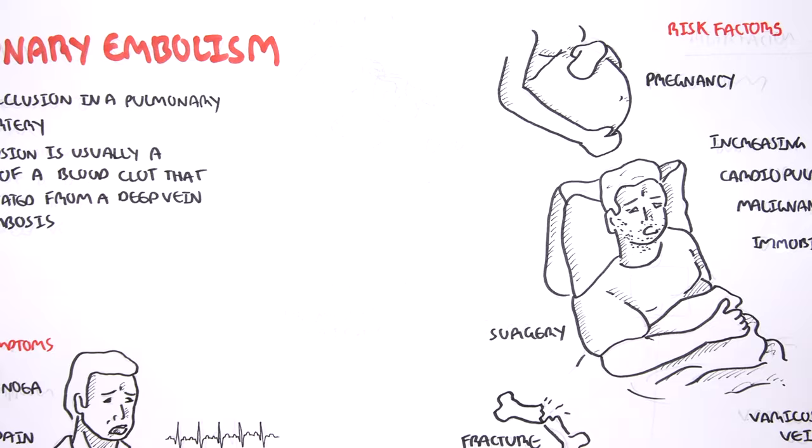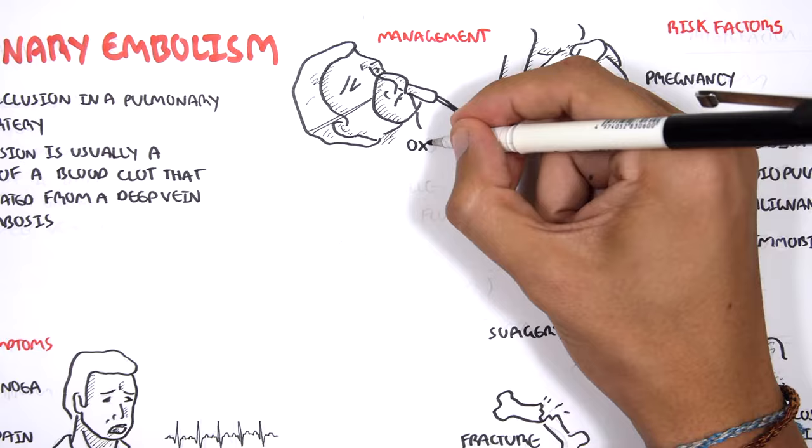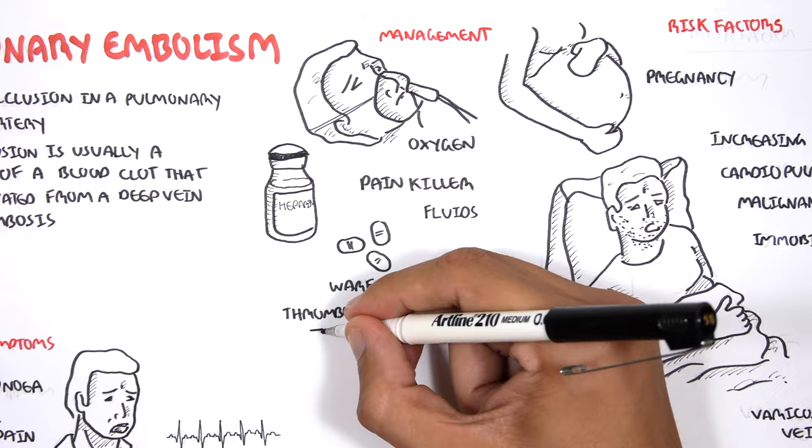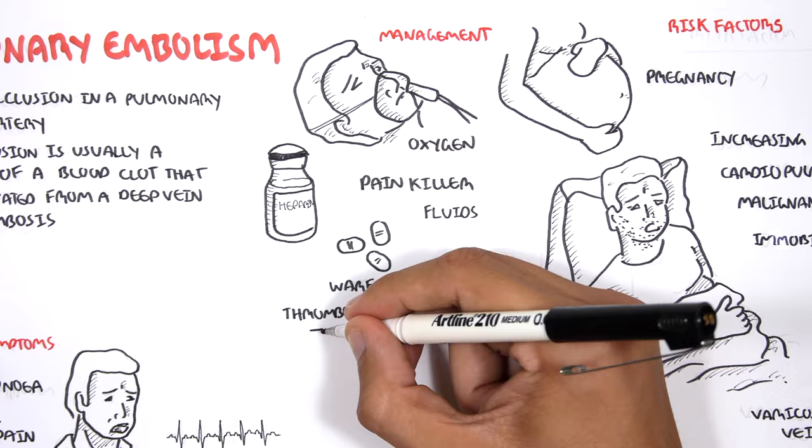The standard management of pulmonary embolism includes oxygen, painkillers, fluids, the administration of heparin IV, warfarin orally, and in case of emergencies, thrombolytics. That was an introduction to pulmonary embolism. Thank you for watching.